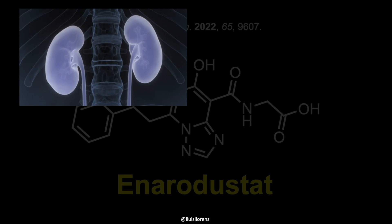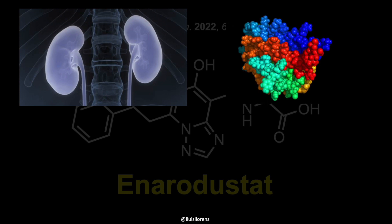Kidneys produce a hormone called erythropoietin, which signals the body to make red blood cells. In a person with chronic kidney disease, the kidneys cannot produce enough erythropoietin, leading to a reduced number of red blood cells.